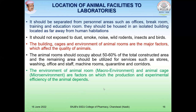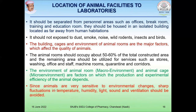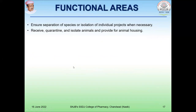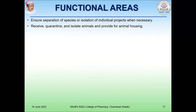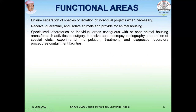The environment of the animal room includes macro environment, which is the room environment, and micro environment, which is the environment within the cage. These are the factors on which the production and experimental efficacy of the animal depend. Animals are very sensitive to environmental changes, so sharp fluctuations in temperature, humidity, light, sound, and ventilation should be avoided. The functional area where experiments are carried out ensures separation of spaces or isolation of individual projects when necessary. Specialized laboratories, individual areas contiguous with animal housing, are required for surgery and intensive care.